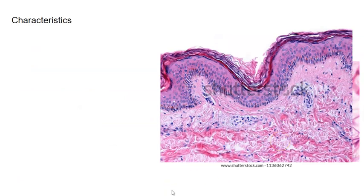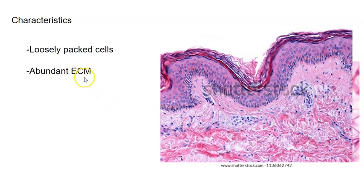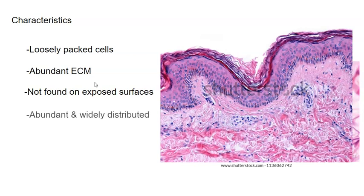Let's look at some characteristics of connective tissue. Connective tissue is loosely packed. Notice how close the cells are together in epithelium, and then right deep to the epithelium is connective tissue, where there's a lot of space between the cells. So the cells are loosely packed, meaning there's an abundance of extracellular matrix. Unlike epithelium, connective tissue is not found on exposed surfaces. It's abundant and widely distributed throughout the body — you find it almost everywhere.